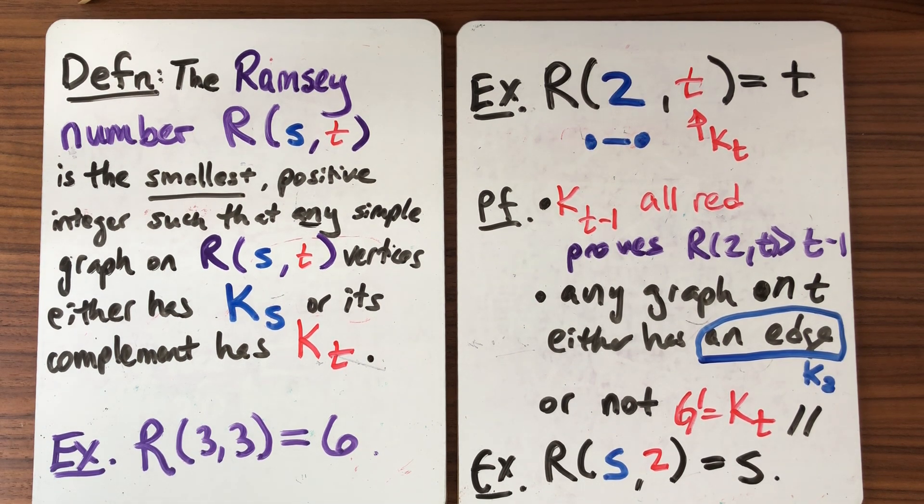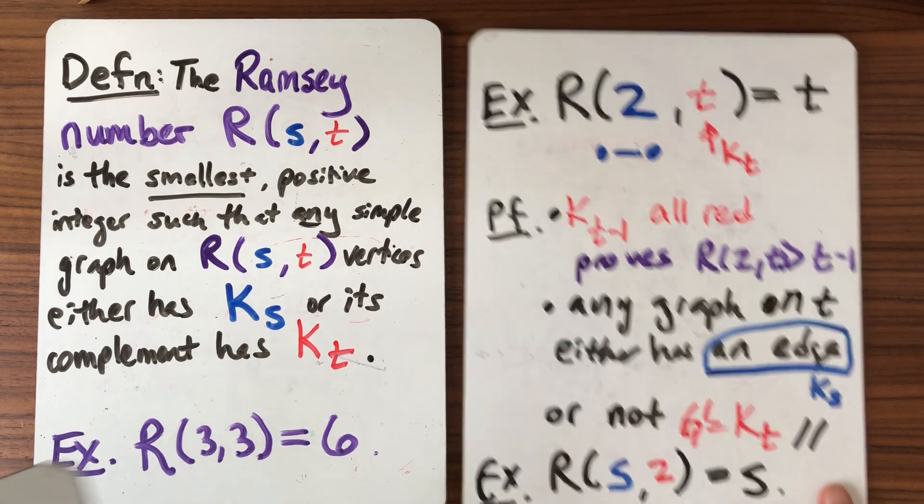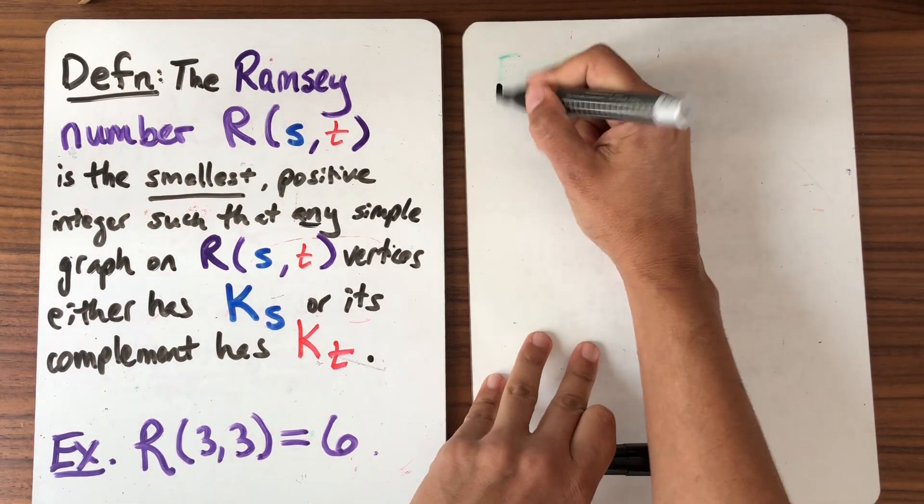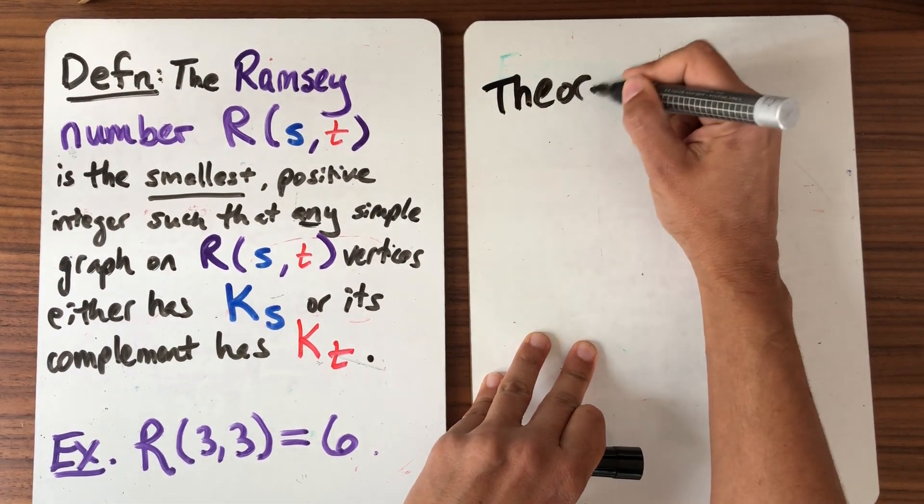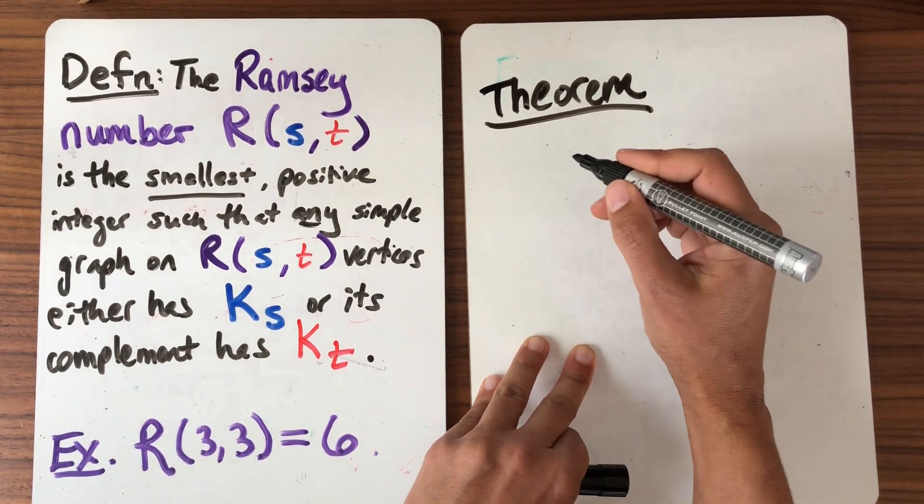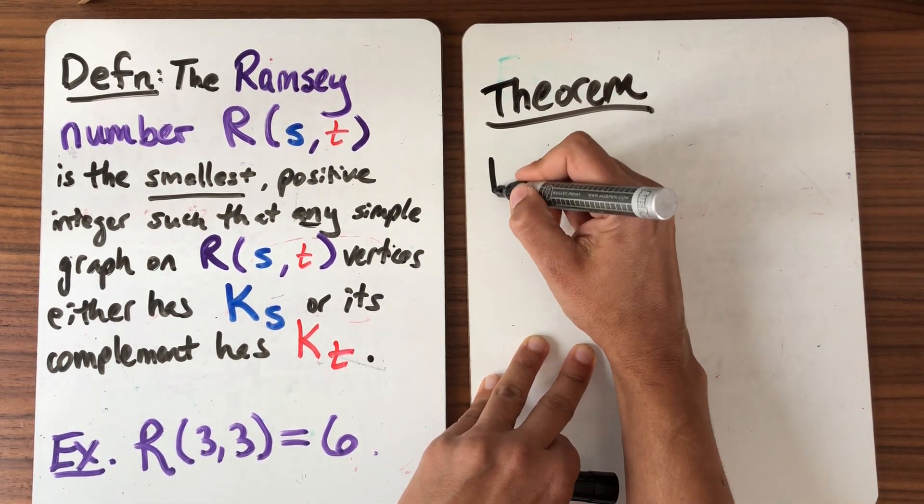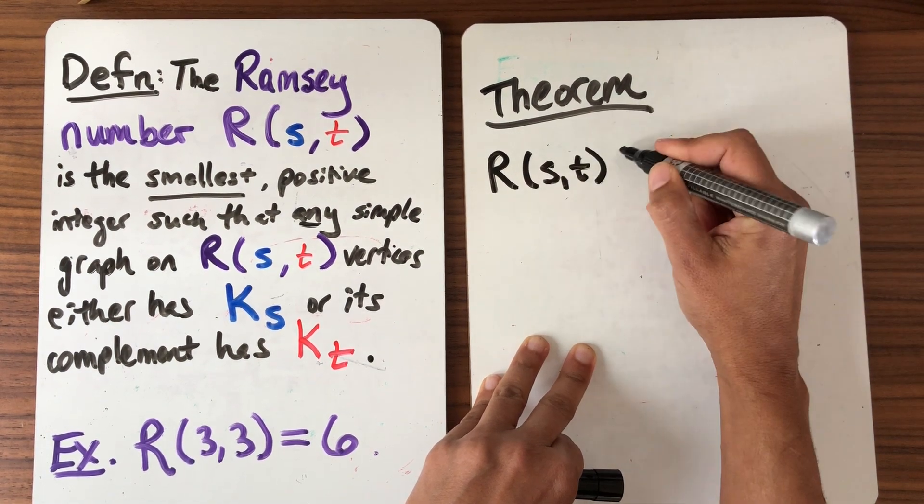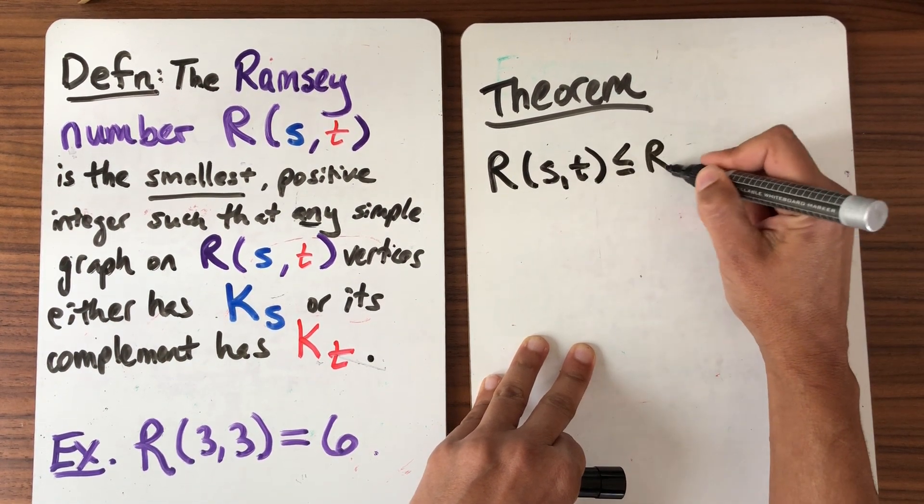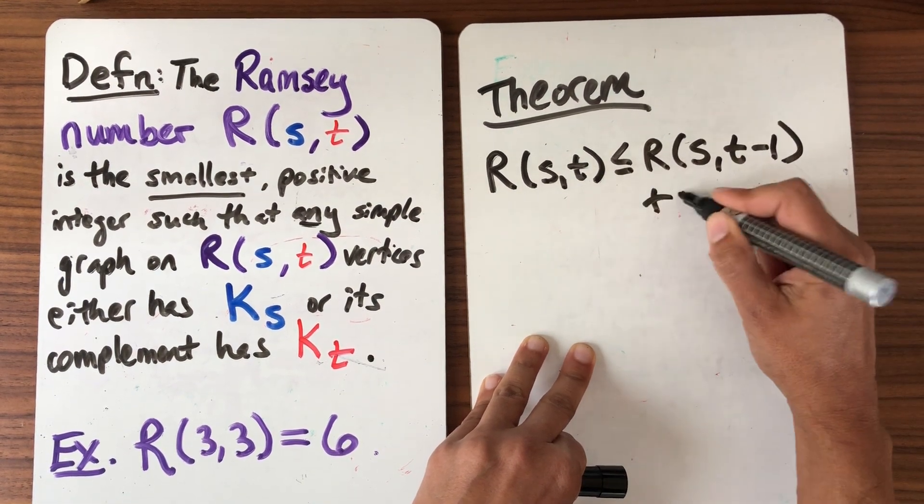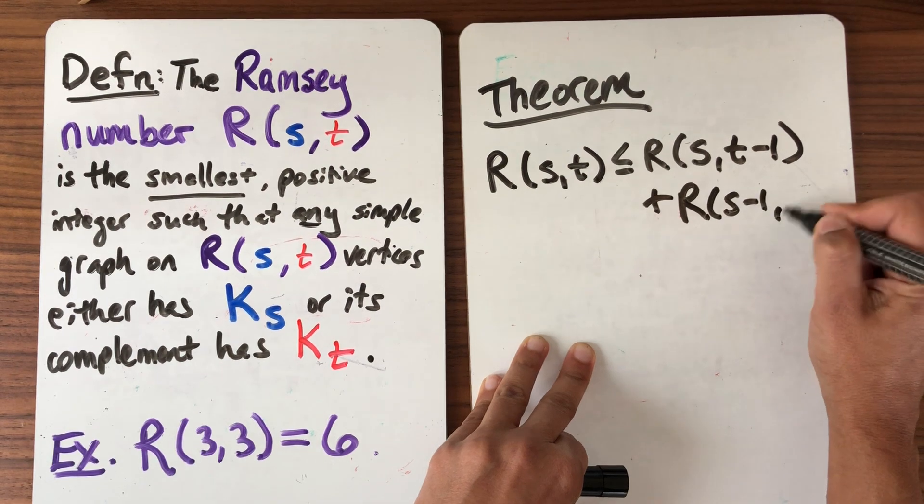Well the theorem we're going to prove next time is the following. Here is a theorem about Ramsey numbers. One of the few really nice theorems, really powerful theorems that we have. It's going to say that R(s,t) is less than or equal to R(s,t-1) plus R(s-1,t).